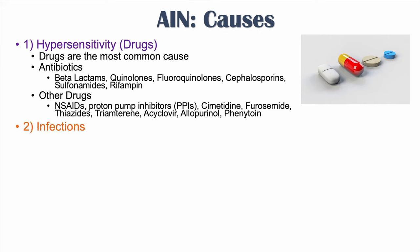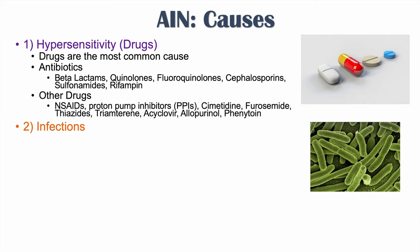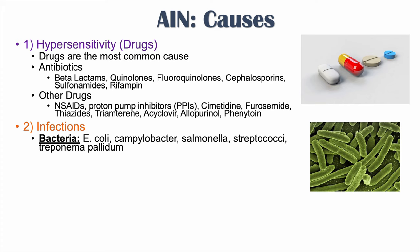The second category of causes is infections, which account for about 10% to 15% of AIN cases. Bacterial infections that can cause AIN include E. coli, Campylobacter, Salmonella, streptococci, and Treponema pallidum, the spirochete responsible for syphilis.